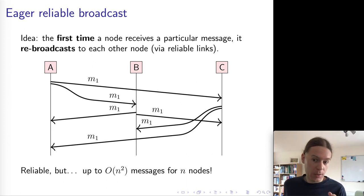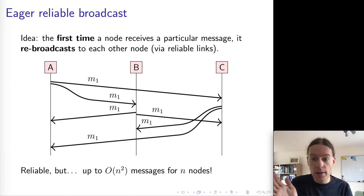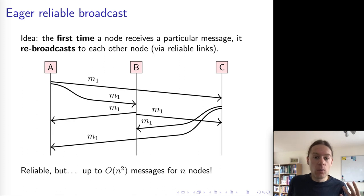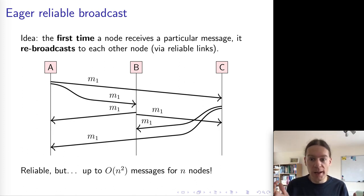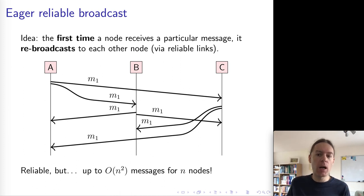However, it is quite expensive because every node that receives a message will again send that message to N-1 other nodes. So in total, we're going to end up with on the order of N-squared messages being sent for every single message that a node wants to broadcast. So we get reliability, but at the cost of fairly high network bandwidth.